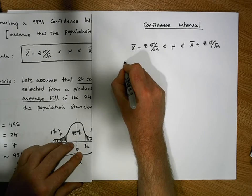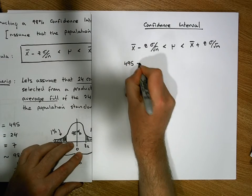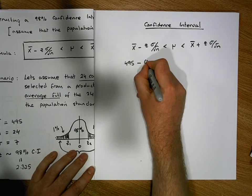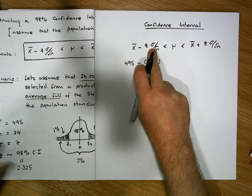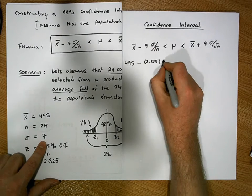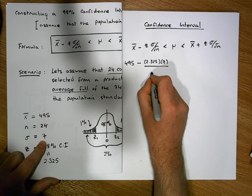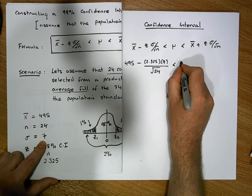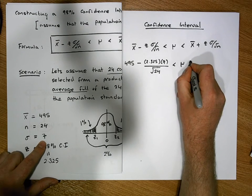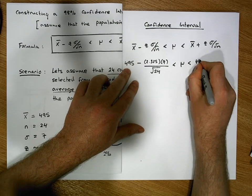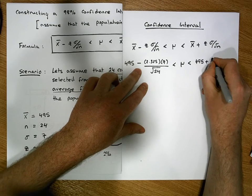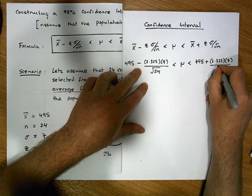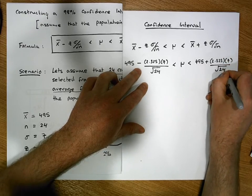Substituting in our values: x-bar is 495, so this becomes 495 minus the z-score of 2.325, times the population standard deviation which is 7, divided by the square root of the sample size which is the square root of 24. This must be less than the population mean, which must be less than 495 plus 2.325 times 7 over the square root of 24.